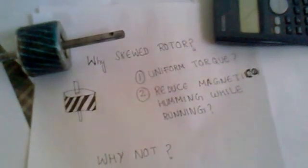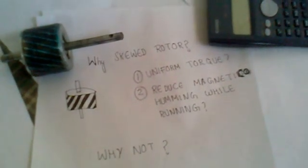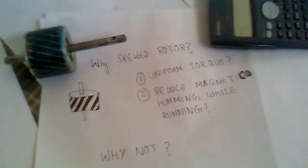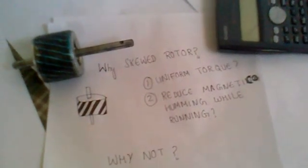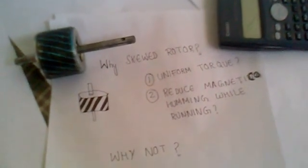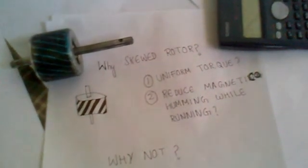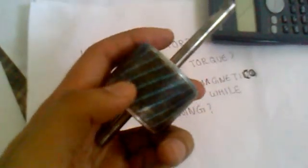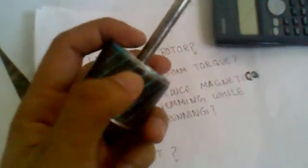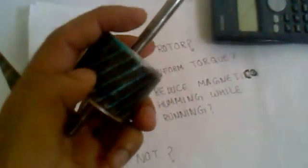Hello YouTube. In this video we will be discussing the reasons why the rotor in the case of an induction motor has skewed copper bars, like in this case. They have skewed copper bars, and the copper bars are never made vertical, like in this case.